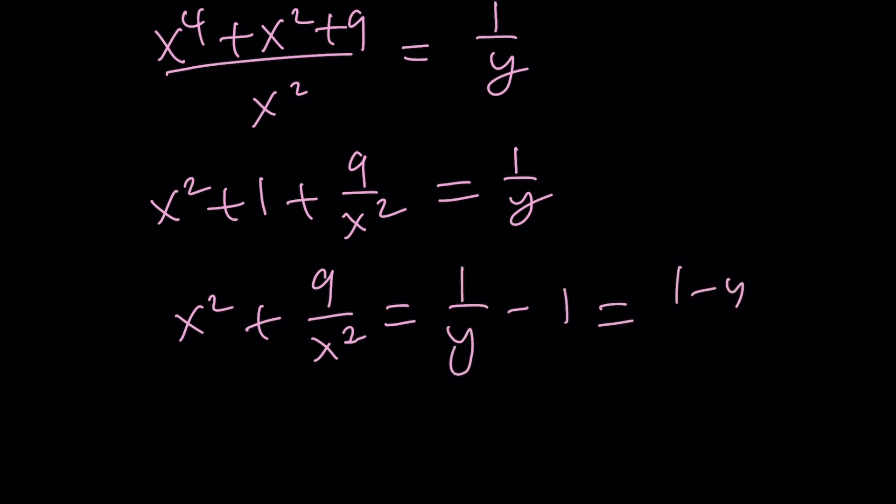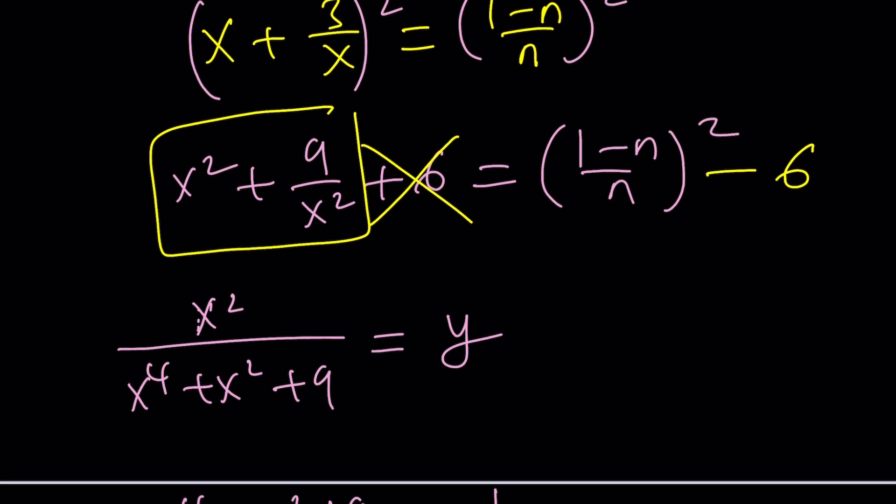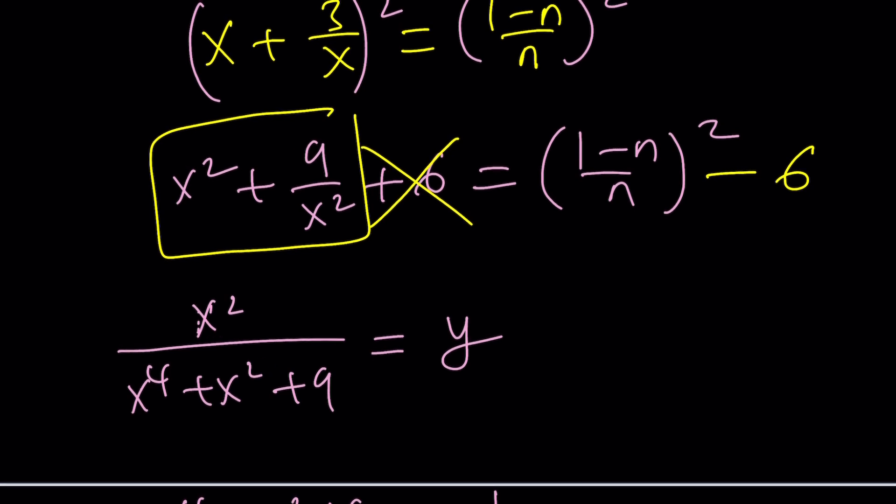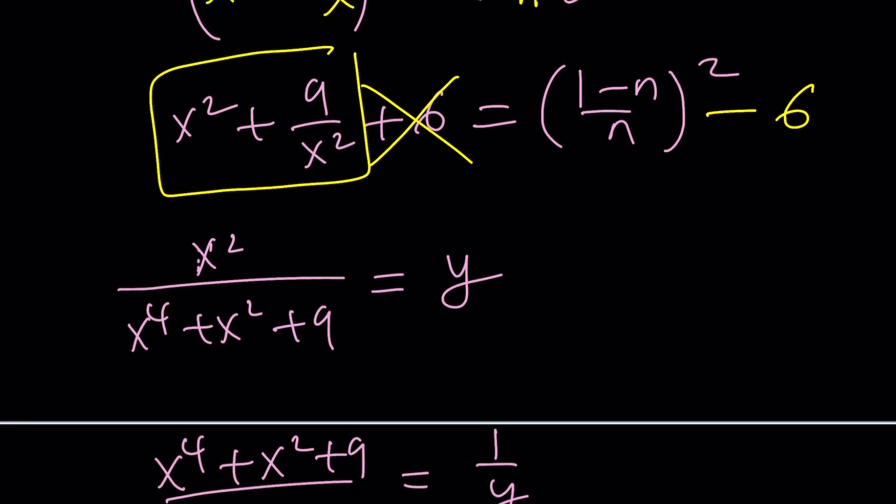And then isolate x squared plus 9 over x squared. Make a common denominator. Great. Now you do have this. If you subtract 6 from both sides, it's going to cancel out. So you can go ahead and plug this in because we're looking for, we're looking for y. Okay so x squared plus 9 over x squared is equal to this.